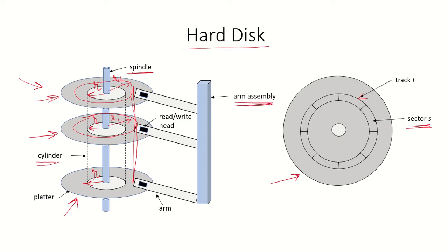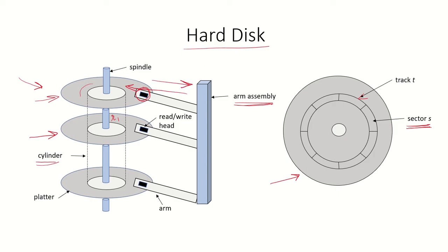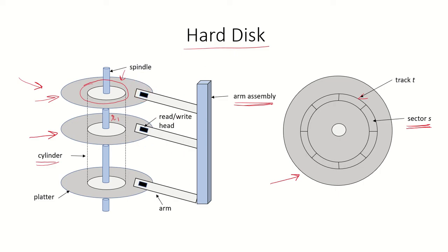We have an arm assembly which holds the read/write heads. As we can see, this is a read/write head, and the arm assembly can move forward or backward, taking the read/write head over a particular track. If we want to go to a particular track, the arm assembly moves forward, and all the heads move simultaneously over that particular cylinder. If we want a track further in, the arm assembly moves backward — all arms moving simultaneously to a particular track.